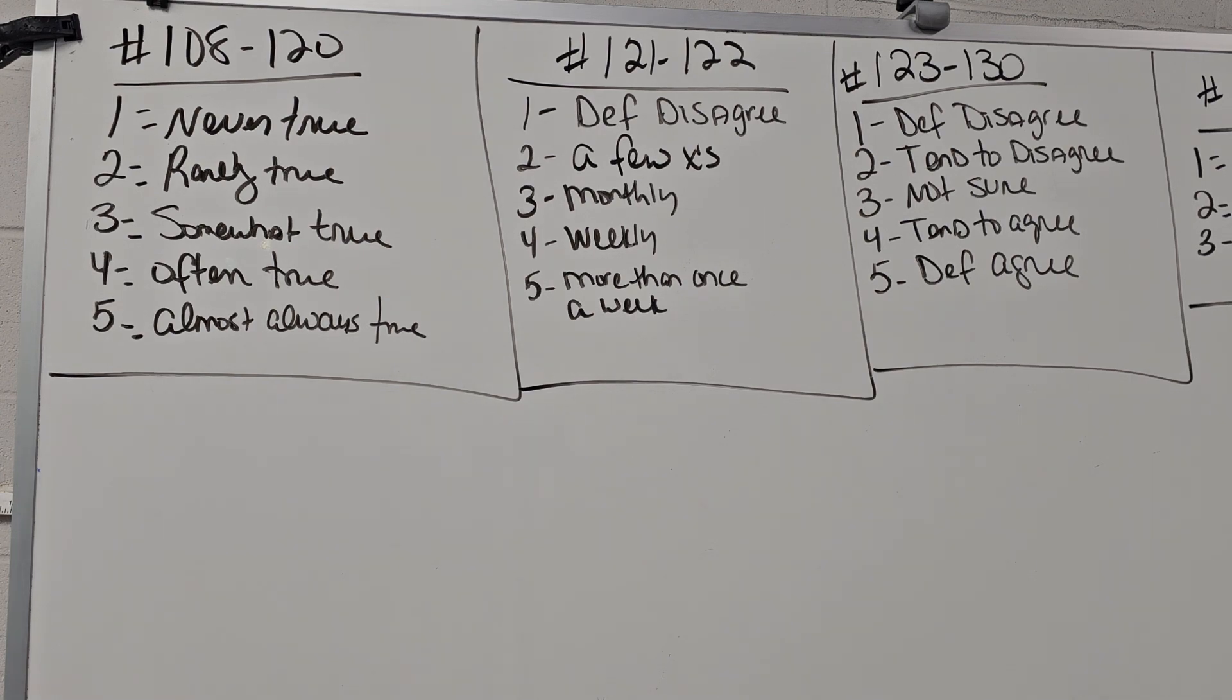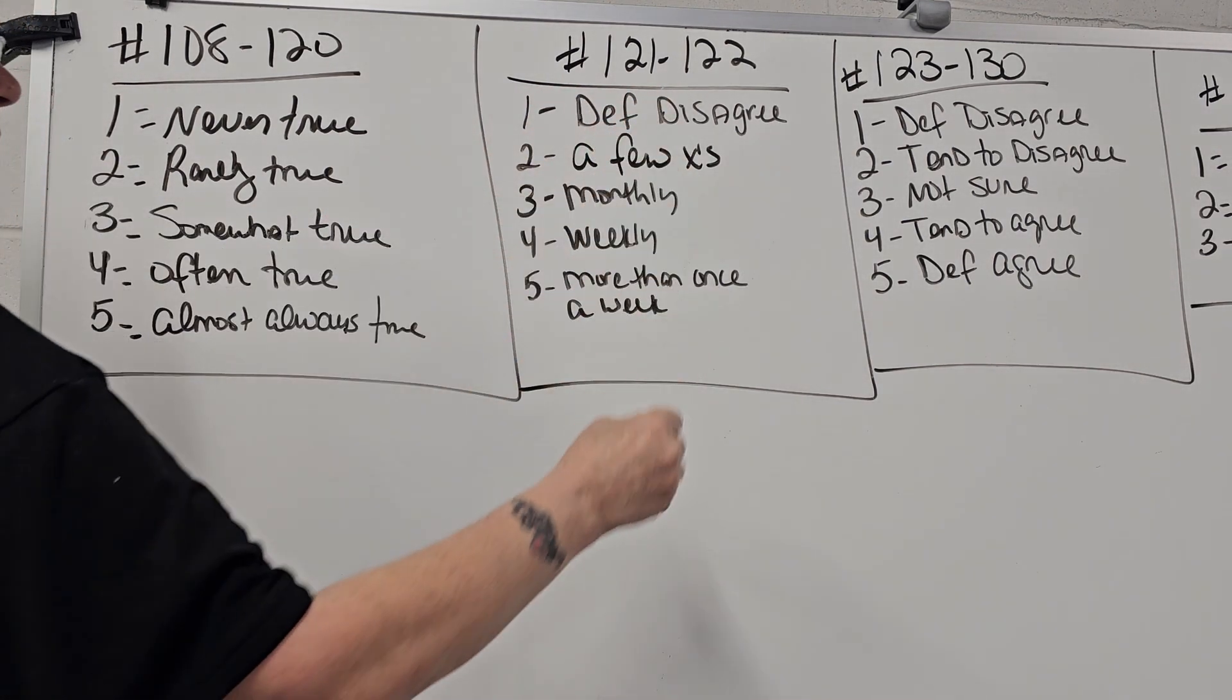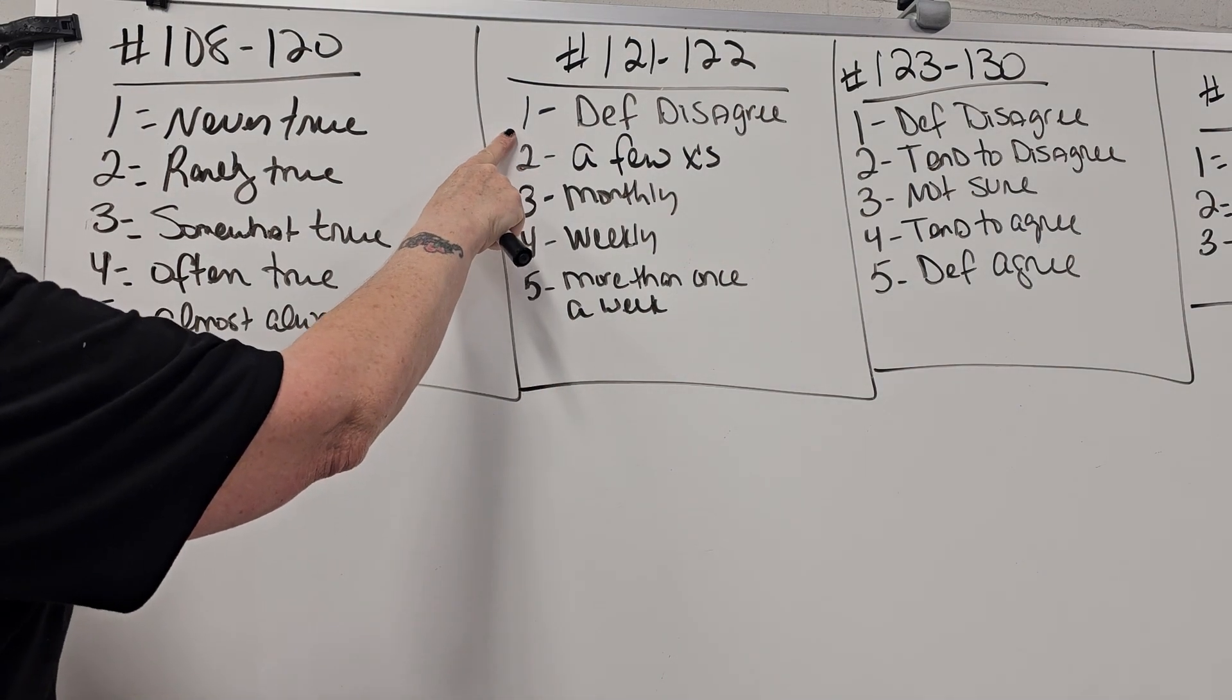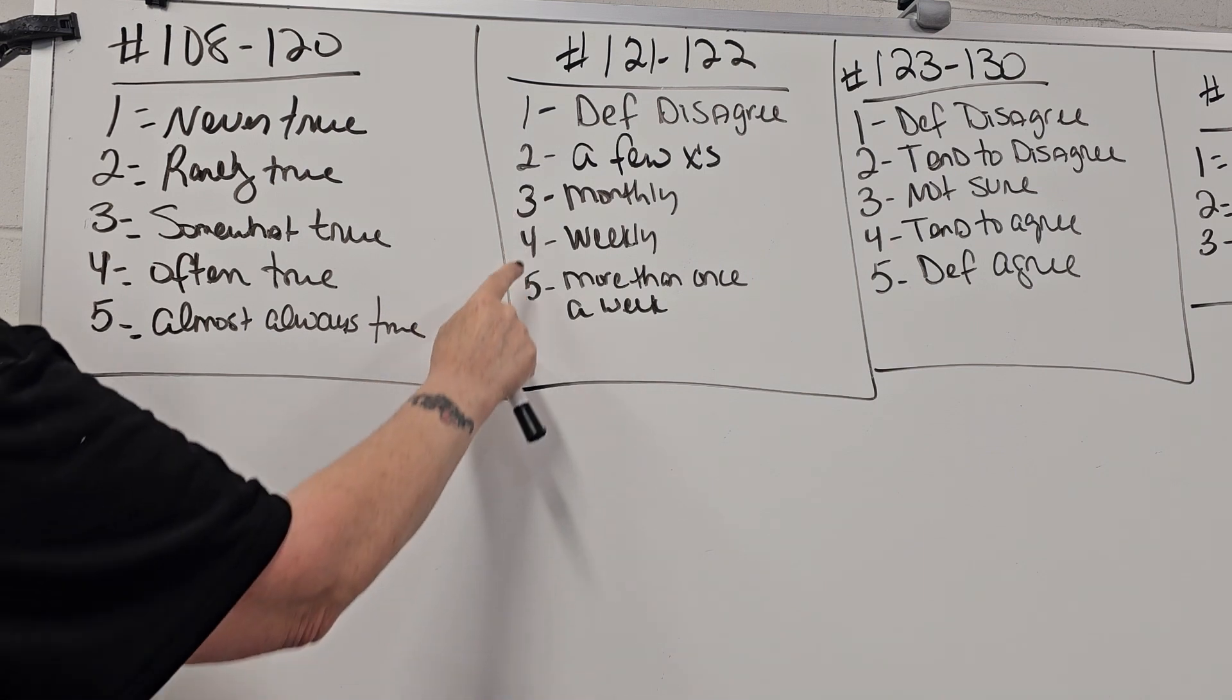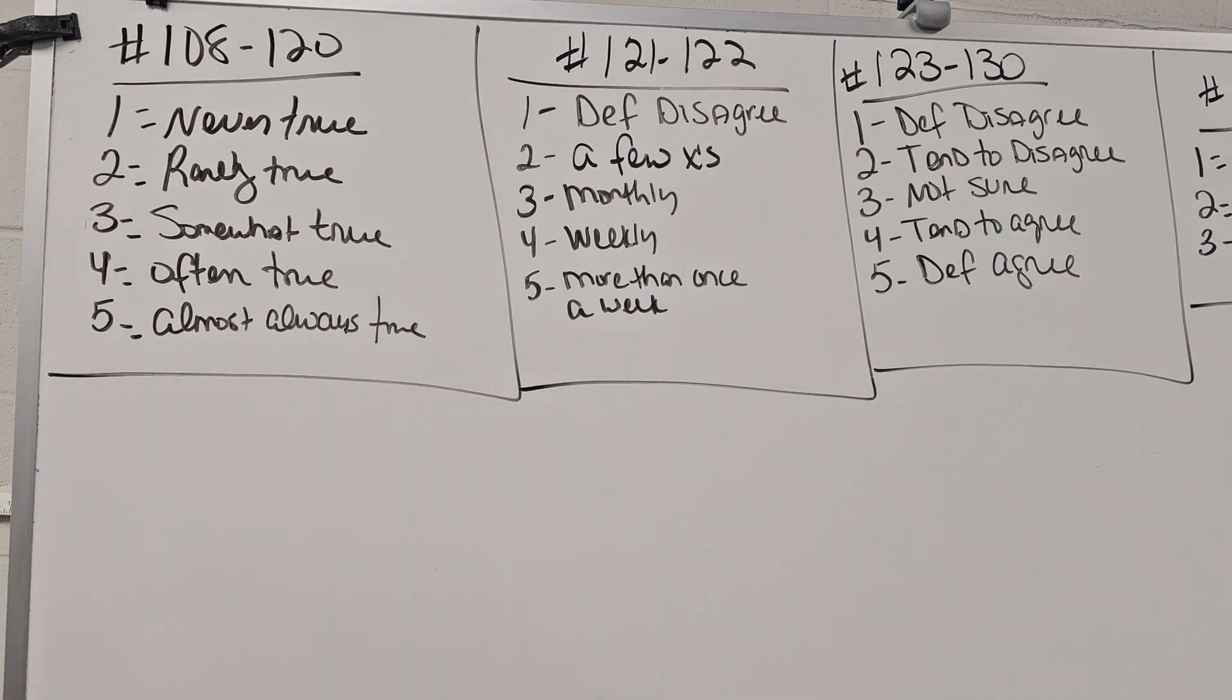Okay now we're right here on number 121 through 122. One is definitely disagree, two is a few times, three is monthly, four is weekly, five is more than once a week. Number 121 how often do you attend worship services at your church? For us we have them Wednesday night, Friday night, Saturday night, Sunday night, we have it all the time. How often do you attend or wherever your church is? 122 how often do you attend prayer groups and prayer meetings?